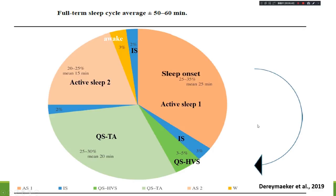Sleep onset usually begins with active sleep, sometimes followed by intermediate sleep, then quiet sleep. Trusset alternans is usually present in full-term newborns. The cycle then returns to active sleep (REM), then gradually to awake and intermediate sleep. The full-term sleep cycle averages 50 to 60 minutes, which is why EEG recording for newborns should last at least one hour to capture all sleep states.